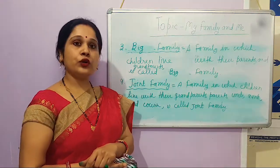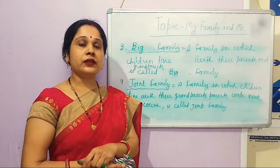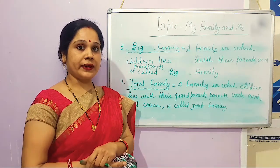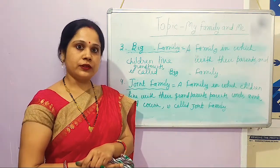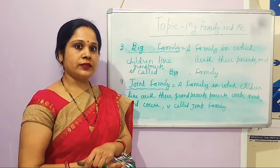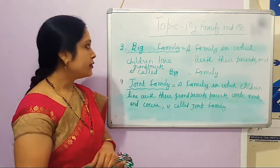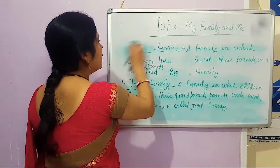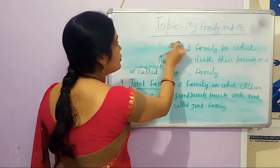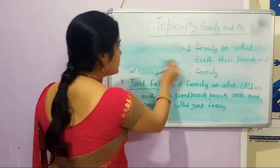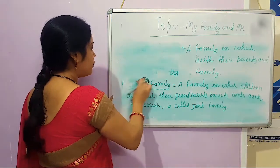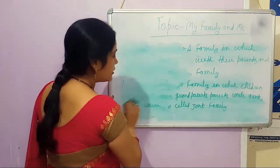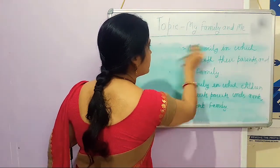I am going to show you the family tree and how you can make a family tree. In a family tree, there is a level of generation — first generation, second generation, third generation. That is called a family tree.